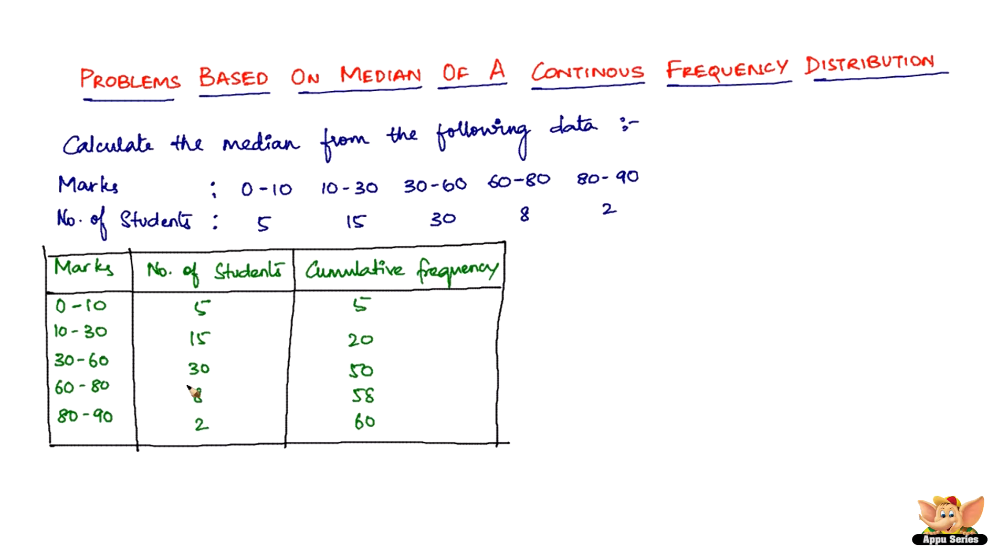Now the sum of the frequency, the number of students is the frequency, the sum of which is 60. You see that it is 60. Now all that we have to do is we found N to be equal to 60.